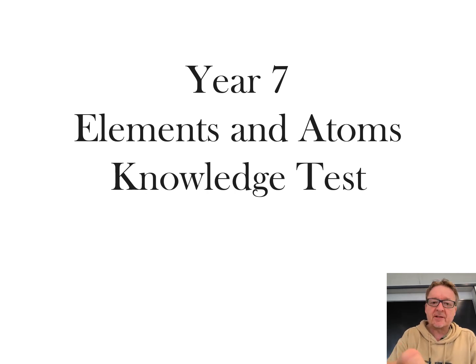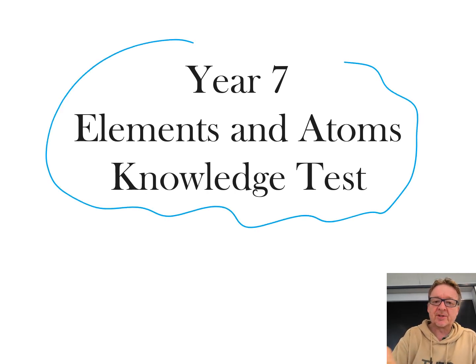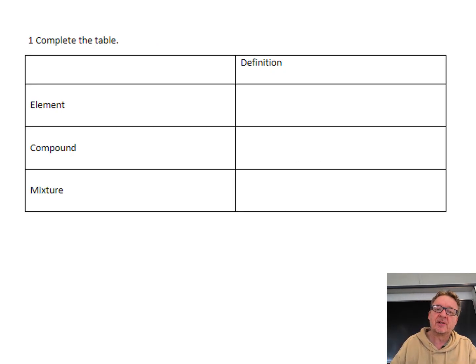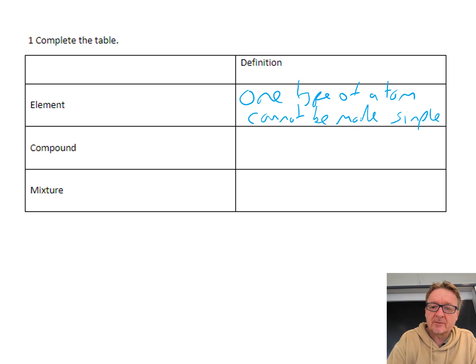Okay, so this is the Year 7 Elements and Atoms knowledge test. It's the fundamentals of everything in chemistry. An element is one type of atom and cannot be made simpler. A compound is two or more elements chemically combined.